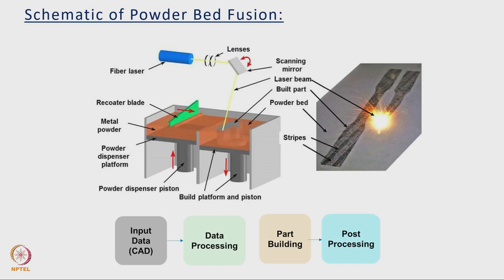At the core of this process, a laser beam interacts with powder particles spread on a build platform. A dispensing platform serves as the powder source, and a recoater blade spreads thin layers of metallic powders on the build platform. The laser beam scans patterns on the powder surface, causing particles to melt instantaneously and solidify, building the part in layers ranging from 40 to about 150 microns thick.